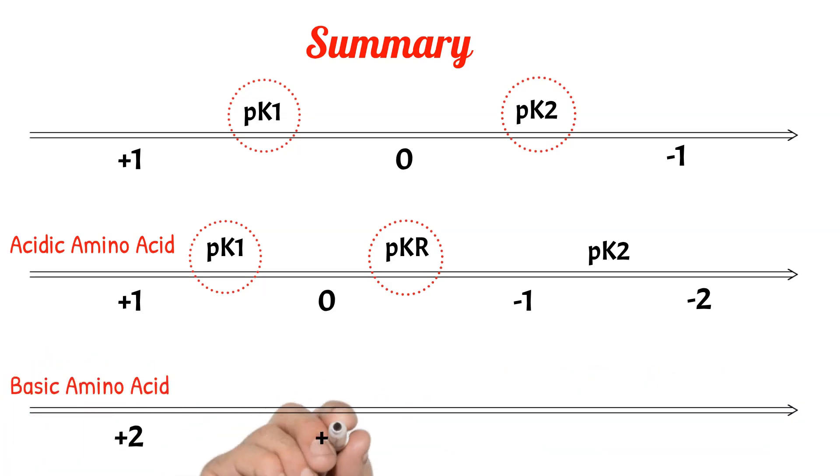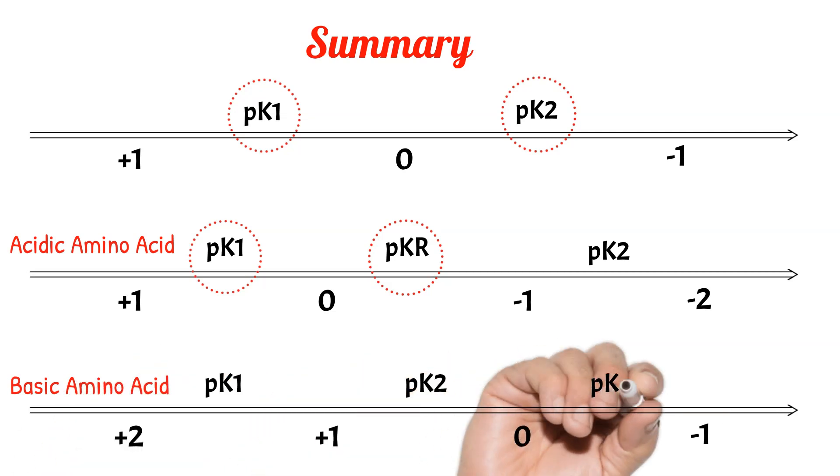This should give us a hint. At very low pH, we expect the basic amino acids to be more attracted to the negative electrode, while at high pH the acidic amino acids will be more attracted to the positive electrode.